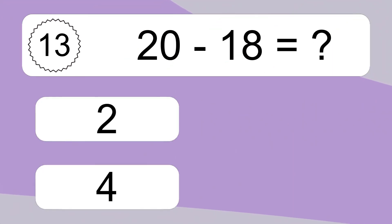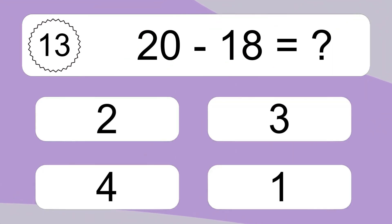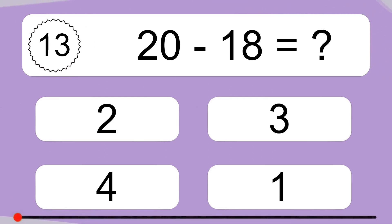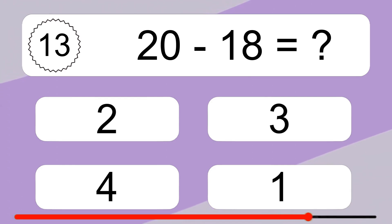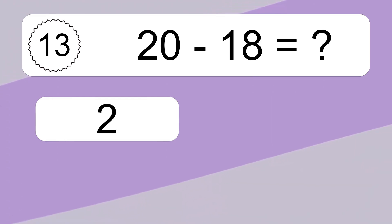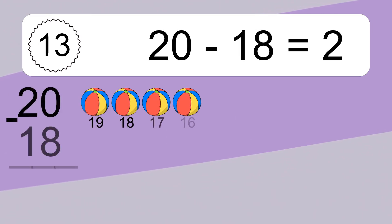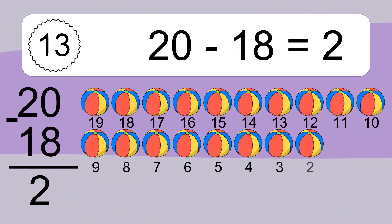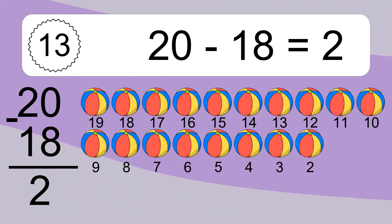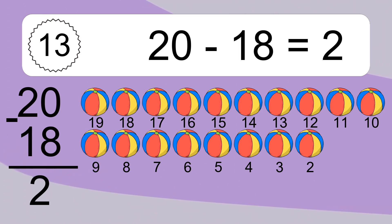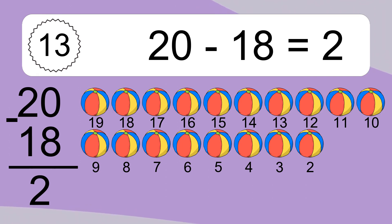20 minus 18 equals what? 20 minus 18 equals 2. Let's count it. 19, 18, 17, 16, 15, 14, 13, 12, 11, 10, 9, 8, 7, 6, 5, 4, 3, 2.